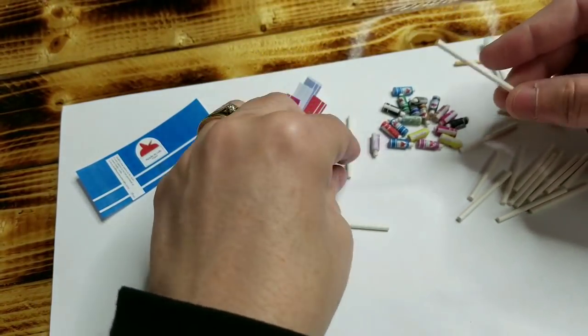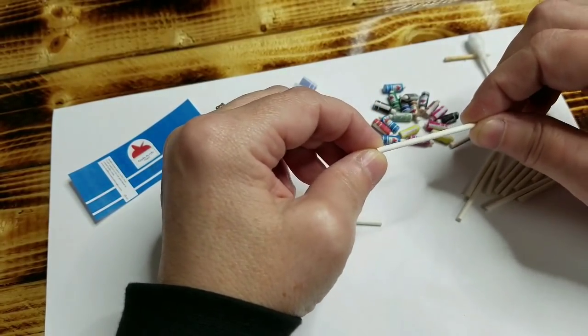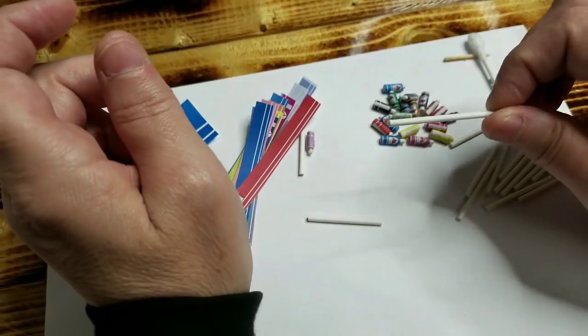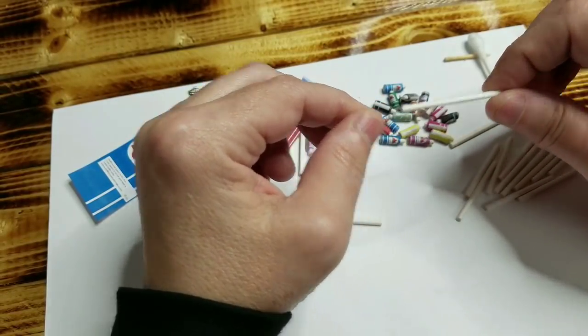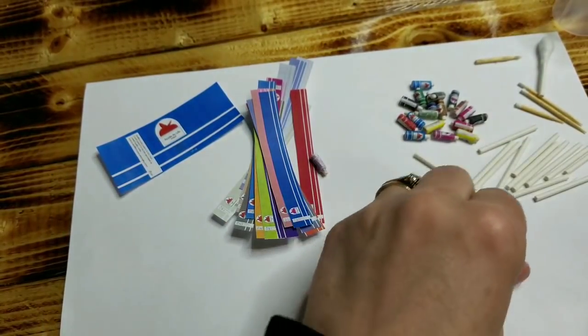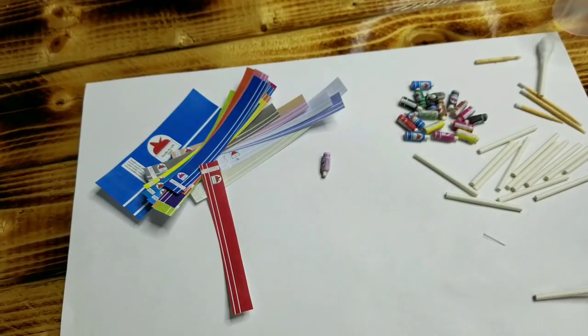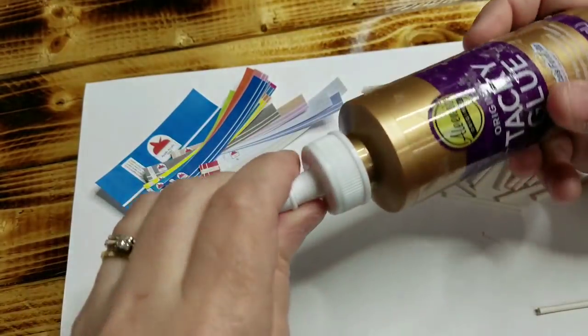I cut mine so that I can do two for each one. You could get more out of one Q-tip, but I prefer not to hold on to it when it's really tiny. And you can get these from Dollar Tree, so they're super cheap to use. In the meantime, get yourself some tacky glue. I'm using the Aleene's tacky glue.